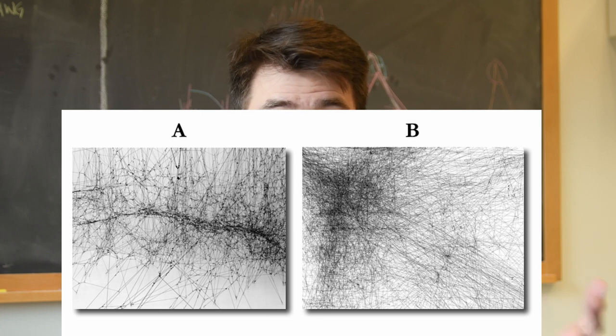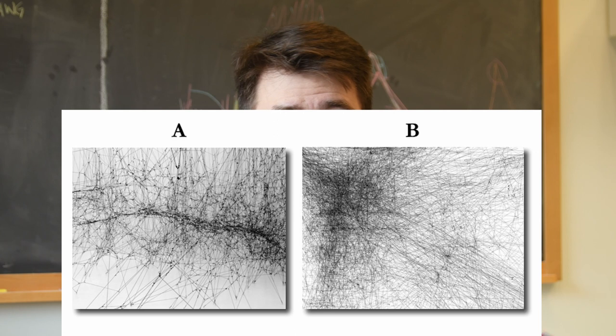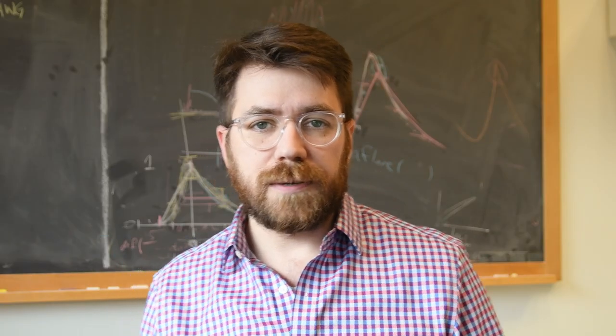Okay, the answer here is B. B is a trace of somebody's mouse motions when they're using a coding editor. A is an art installation, which is supposed to be a giant representation of a spiderweb. Alright, let's move on to the second one.